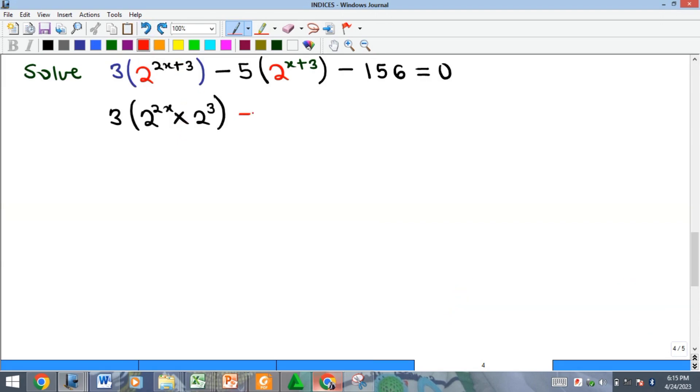This is minus 5 into 2 raised to the power of x multiplied by 2 raised to the power of 3, and that is minus 156 equal to zero.